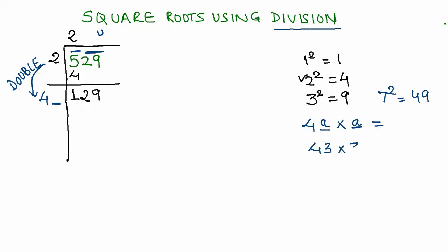43 multiplied by 3. So what do we have over here? 3 times 3 is 9, and 4 times 3 is 12. Bingo, we got the number! So we would write it as 43 times 3 gives me 129, and in this case the remainder is 0. Subtract all of it. Therefore the answer would be square root of 529 equals 23.